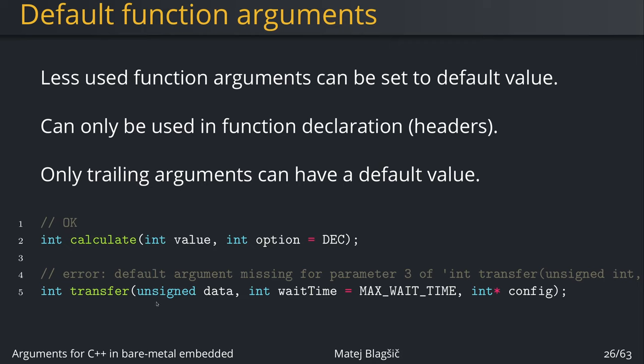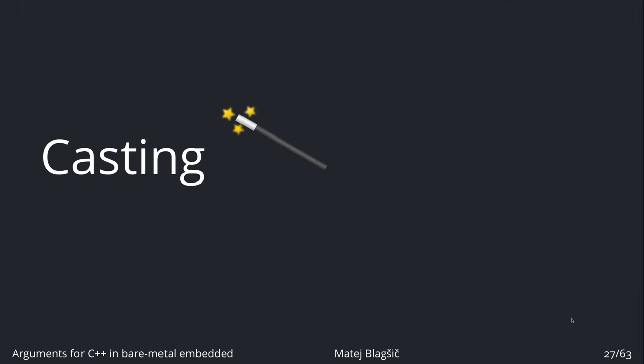On the bottom, you have the inappropriate use of this feature, because the second argument is default but the third one is not. We get an error because the default argument is missing for parameter three of int. In this case, we want to have it as a default argument as well, or we have to move this default argument to the back of the list.